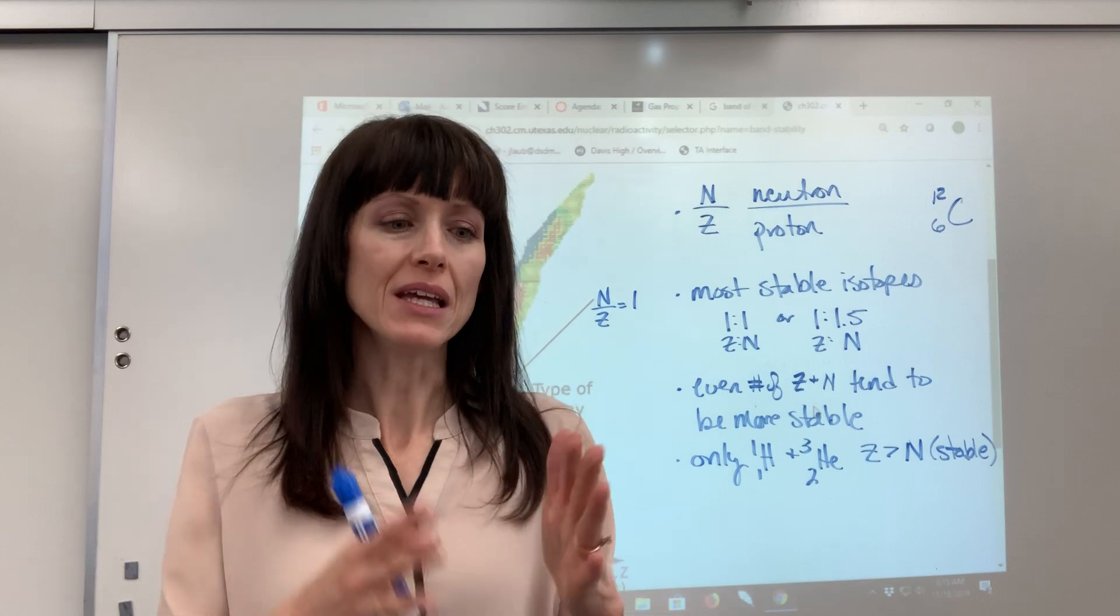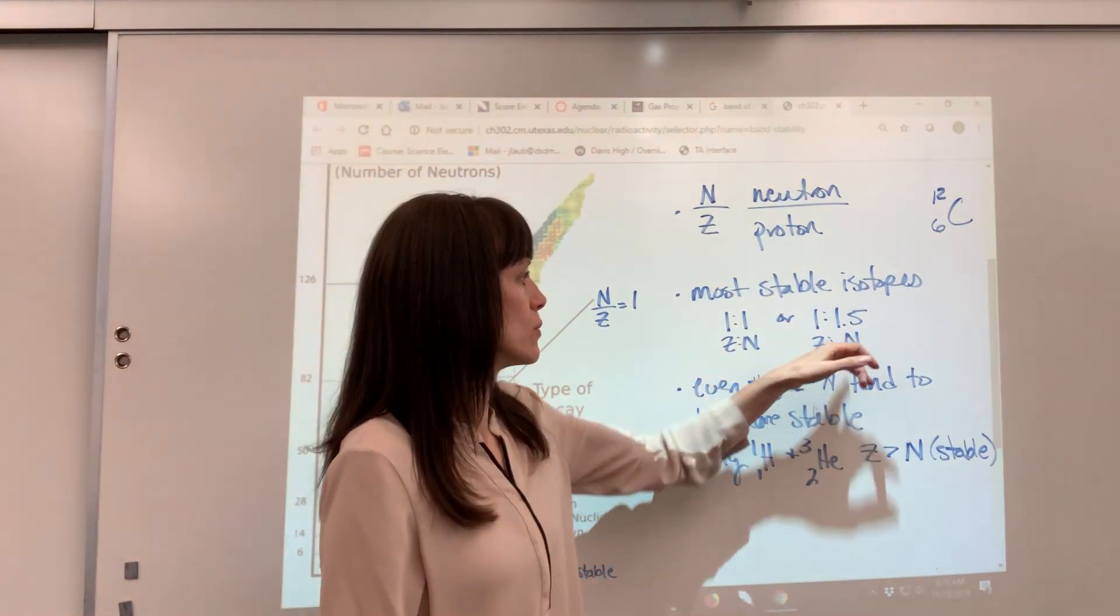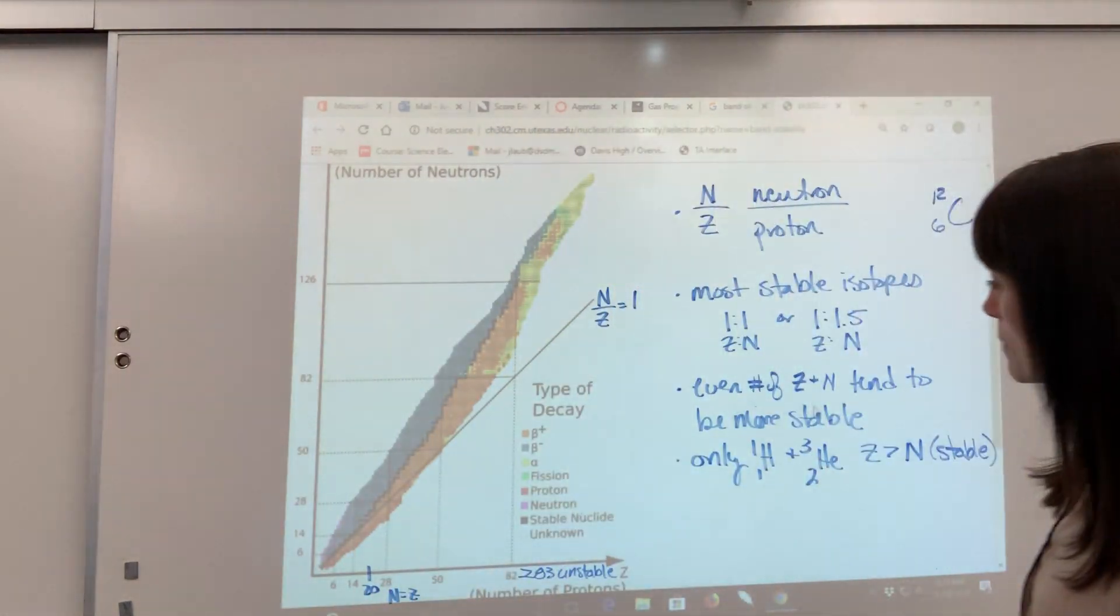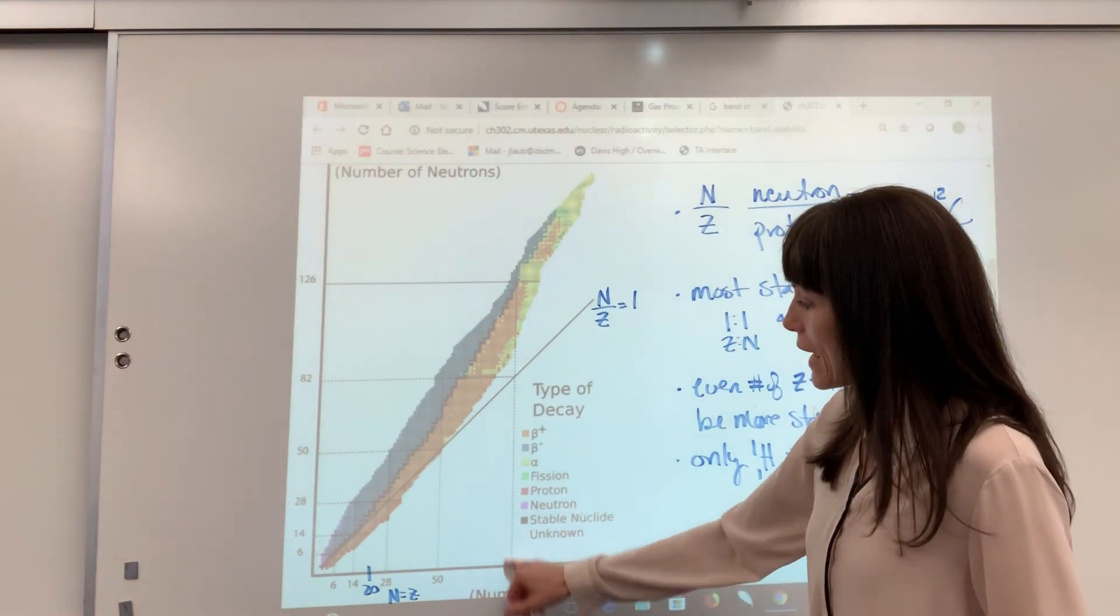Otherwise, the stable isotopes are going to be equal number of protons, neutrons, or a 1 to a 1.5, typically. Let's see here.